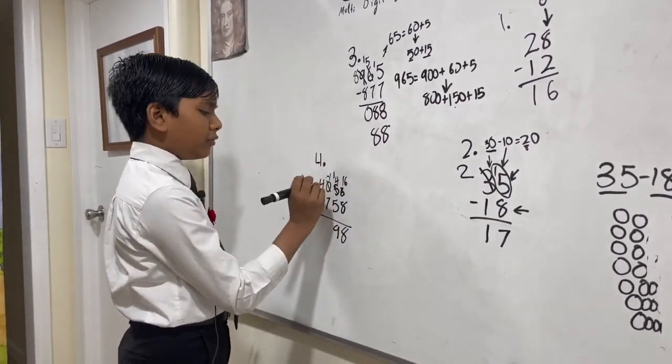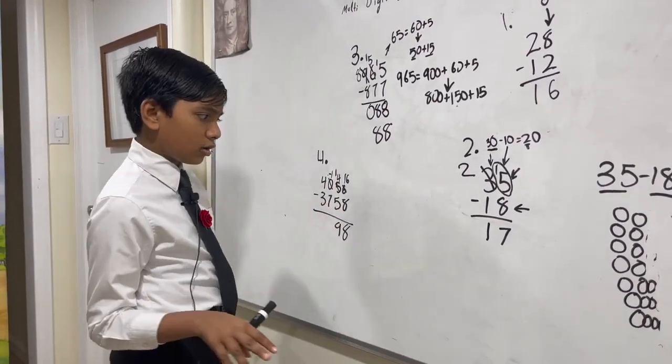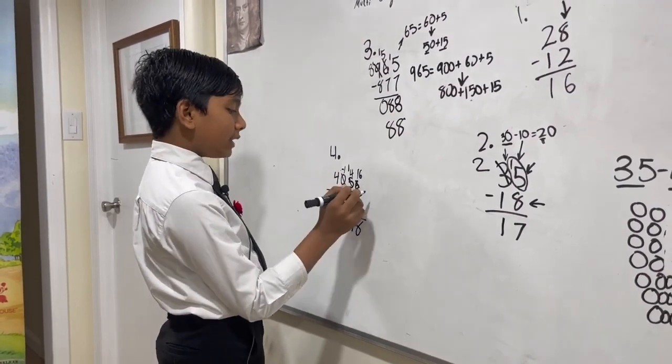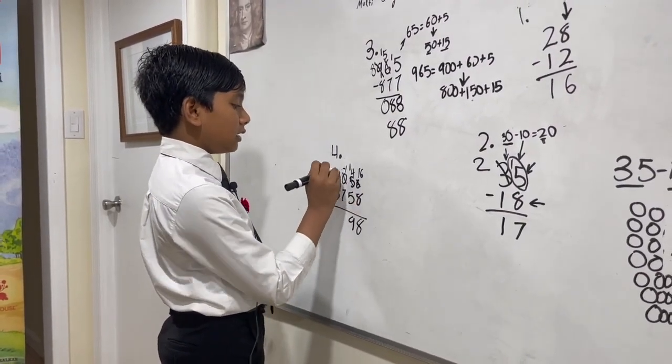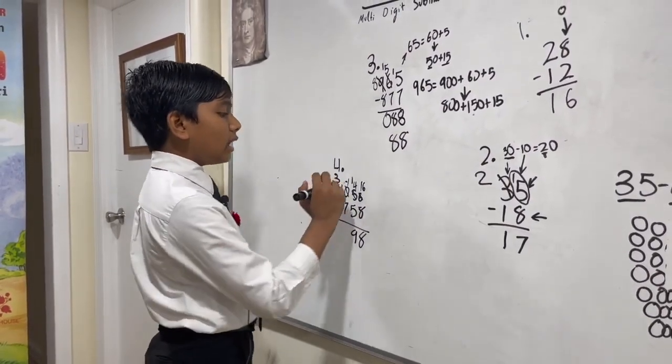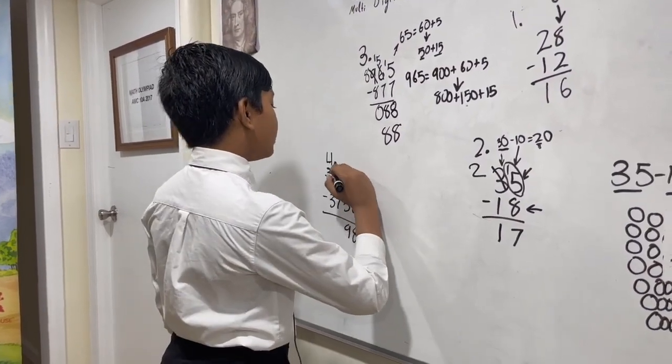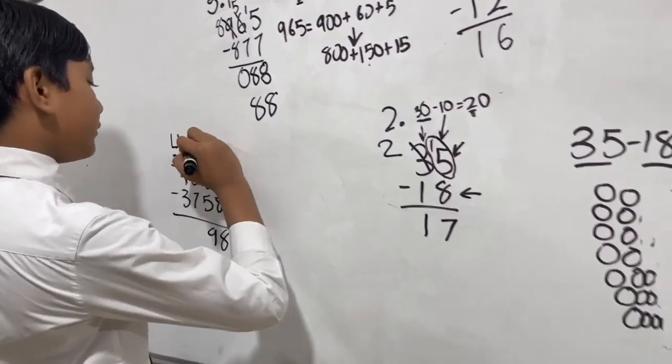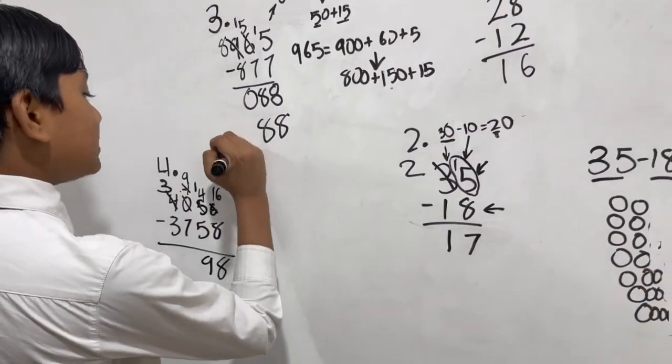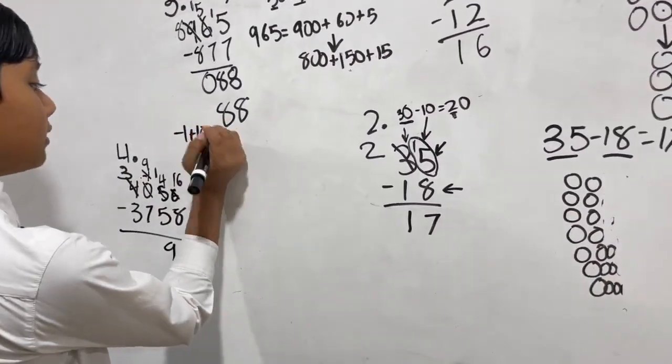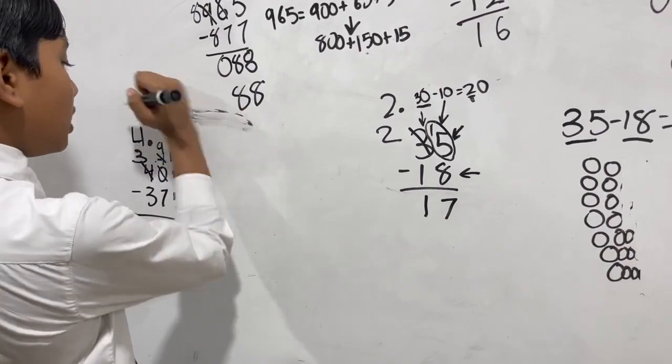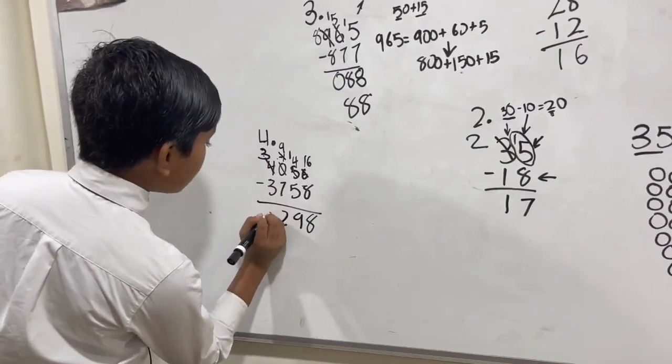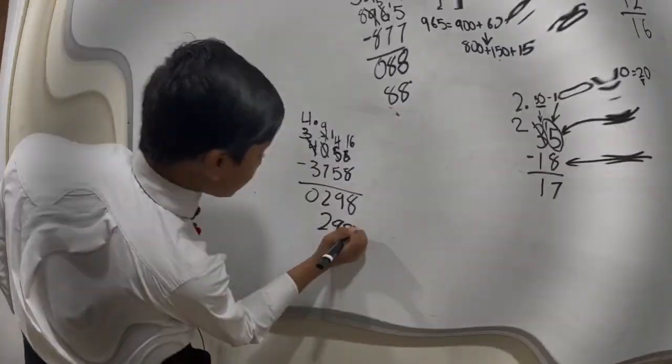14 minus 5 is 9. Now we have negative 1 minus 7—that's not gonna work. So instead we borrow from the 4000, and this becomes 3000. This negative 100 plus 1000 becomes positive 900. Think of it as adding negative 1 and 10. This becomes 9 minus 7 is 2, 3 minus 3 is 0. 298. That's it! Negative one, negative answer is positive, yeah.